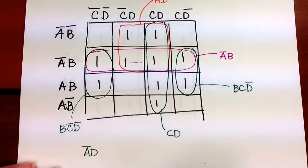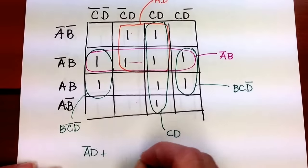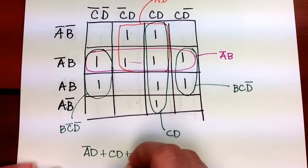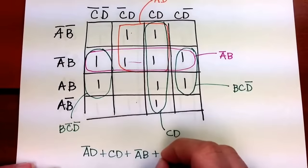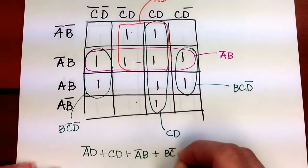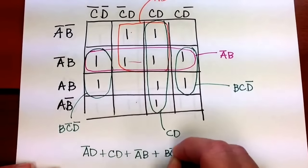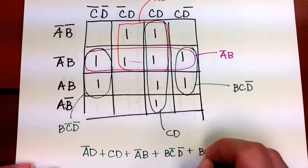So as I write that expression it would look like this: not A D or CD or not A B or B not C not D or B C not D.